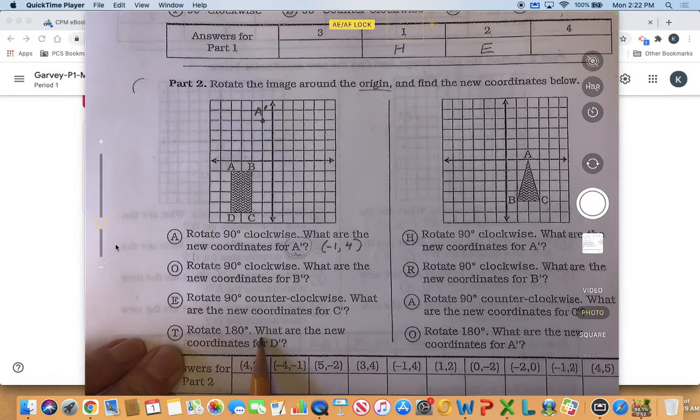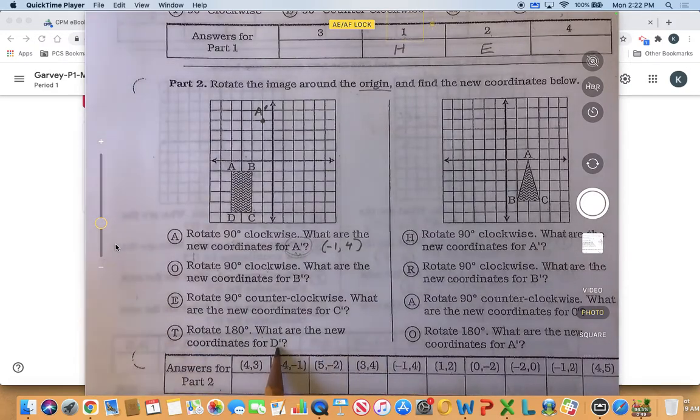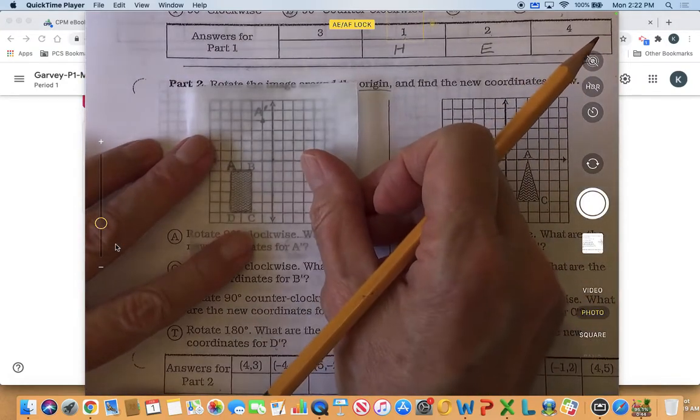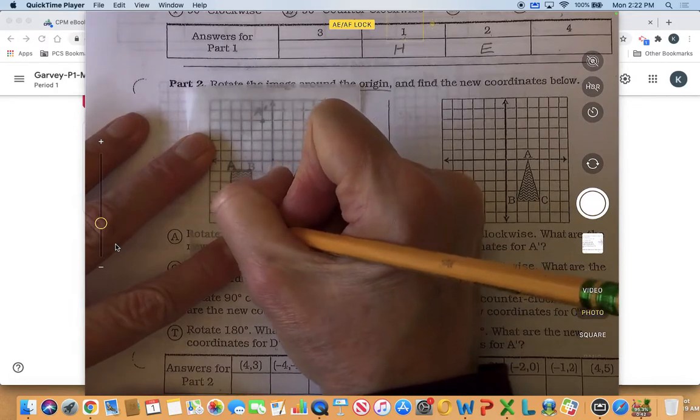So 180 degrees, what are the new coordinates for d prime? Okay, well I can use my same drawing. This time I'll just draw d.